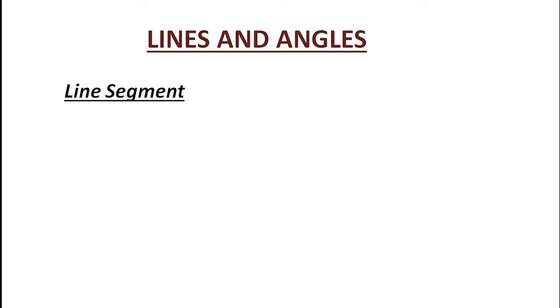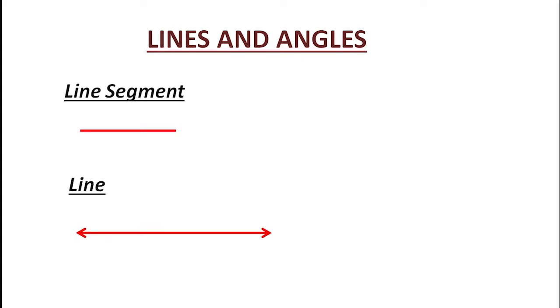Let us start with line segment. A line segment is the shortest distance between two points. That means it has two endpoints and we can measure the length of the line segment.